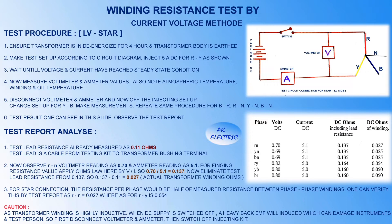Now we will start analyzing the test report. Test lead resistance is already measured as 0.11 ohm. The test lead is a cable from the testing kit to the transformer bushing terminal. Observe R-to-N: voltmeter reading is 0.70 and ammeter reading is 5.1. For finding resistance value, apply Ohm's law: V divided by I. So 0.70 divided by 5.1 gives us 0.137. Now eliminate the test lead resistance: 0.137 minus 0.11 gives us 0.027 ohm, which is the actual transformer winding resistance.